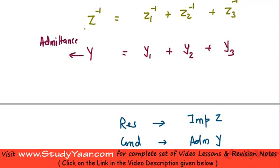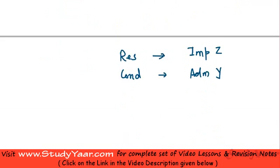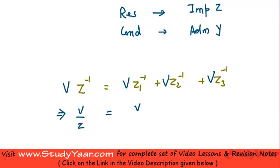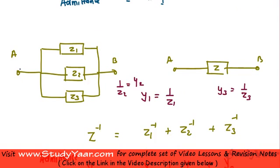Looking again at the original equation used in parallel circuits, if we multiply throughout by voltage V, we get: V over Z equals V over Z1 plus V over Z2 plus V over Z3. Here V is the voltage across terminals A and B, as shown in the diagram.